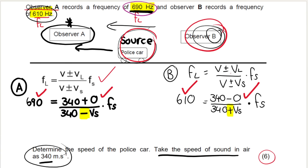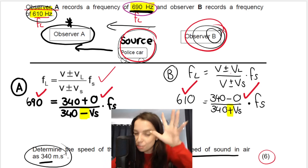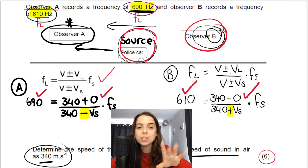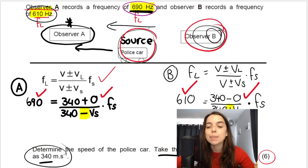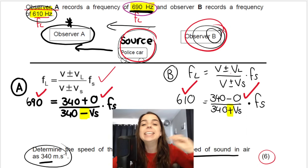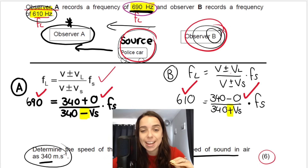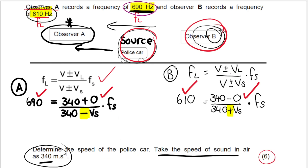What's amazing about these simultaneous equations for the Doppler effect is you get 5 out of 6 marks — 83% — just for writing the formula and substituting correctly for both observers. You get just 1 mark for getting the final answer. So even if you stop at substitution, you get 5 out of 6.